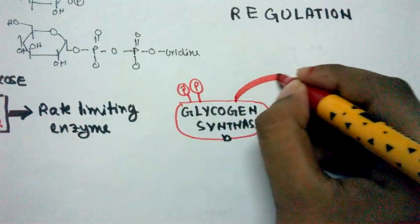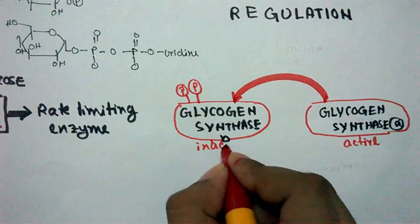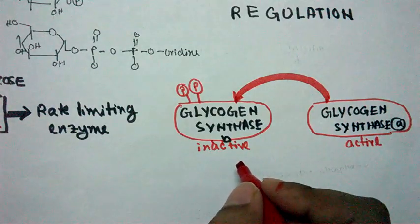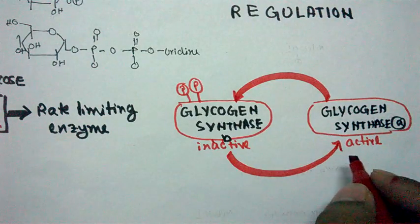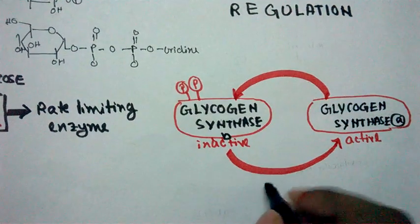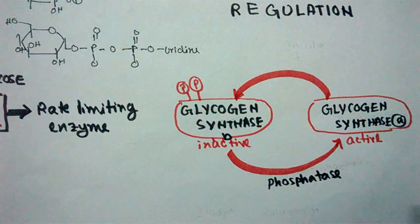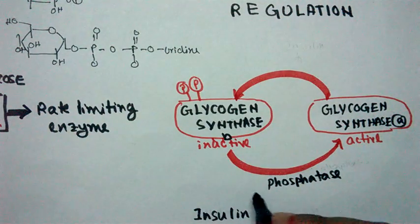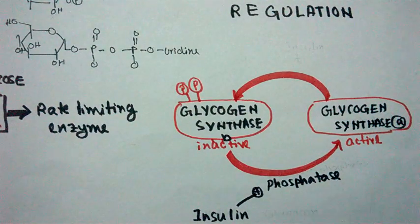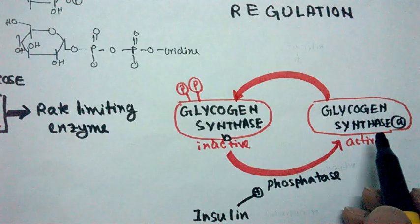So let's see how this switching takes place. From the inactive state to the active state, the conversion is catalyzed by a phosphatase enzyme called phosphoprotein phosphatase, and this enzyme is regulated by hormones such as insulin. Insulin triggers the activity of phosphoprotein phosphatase, and thus the inactive form of glycogen synthase becomes active, and ultimately the glycogenesis reaction takes place.